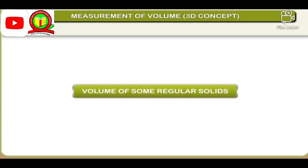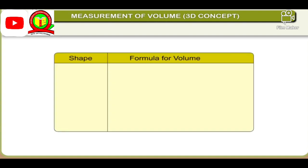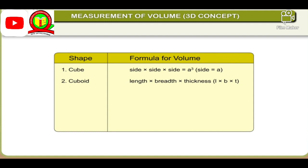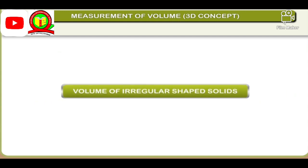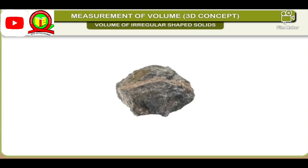Volume of some regular solids — Shape and formula for volume: 1. Cube: side × side × side = A³, where side = A. 2. Cuboid: length × breadth × thickness = L × B × T. 3. Cylinder: π R² H. 4. Sphere: 4/3 π R³. 5. Cone: 1/3 π R² H.